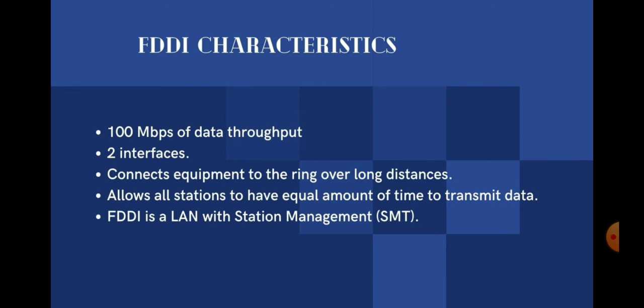Key FDDI characteristics include: 100 Mbps data throughput, two ring interfaces, the ability to connect equipment over long distances, and allowing all stations to have equal transmission time. FDDI also includes a LAN station management component, or SMT.